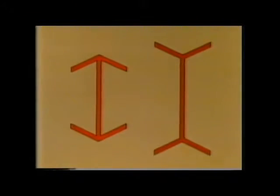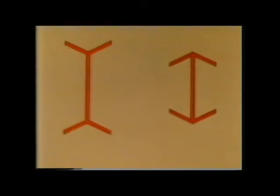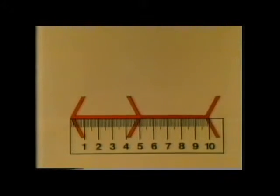Here's another example. Which line looks longer? Let's change the direction of the arrows. In fact, both lines are exactly the same length, but the direction of the arrows seems to make a difference. Even when you can see on the ruler that the two lines are exactly the same length, your eyes are fooled by the direction of the arrows.